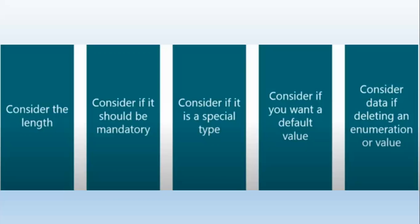If you want a default value for your base enumeration, the value of 0 must be used, or you need to add code to the appropriate table. If you want to delete or modify a base enumeration or its values, you should consider the data related to the enumeration.